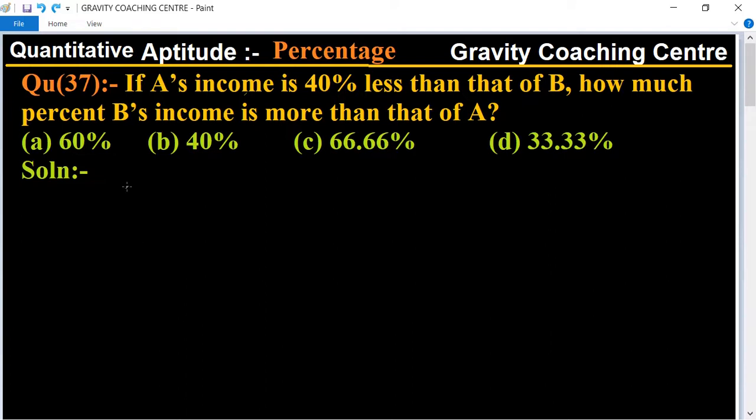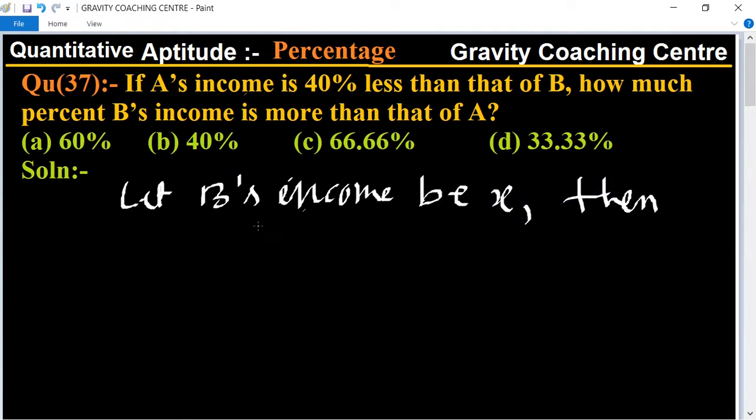In this question, first of all we will let B's income be X. Then A's income equals 40% less than B's income.